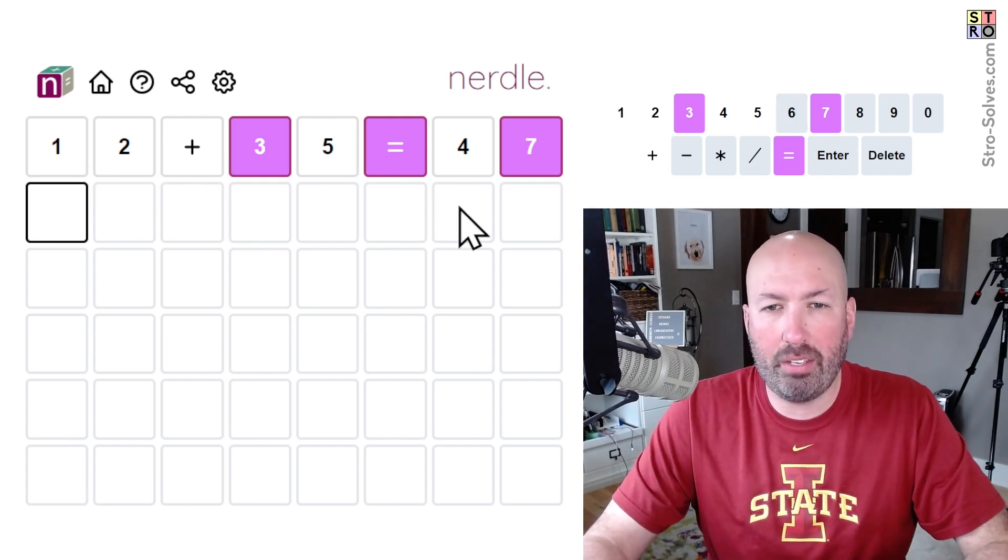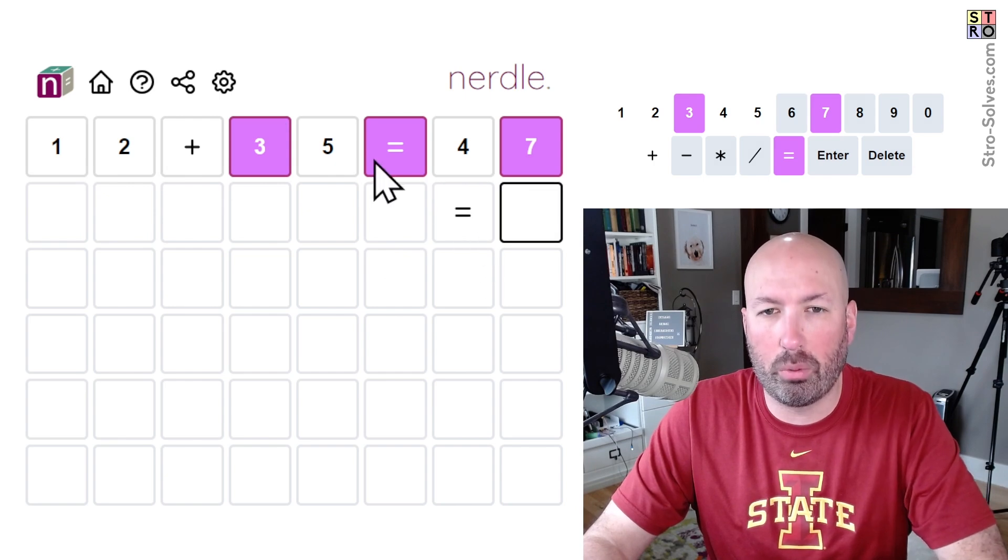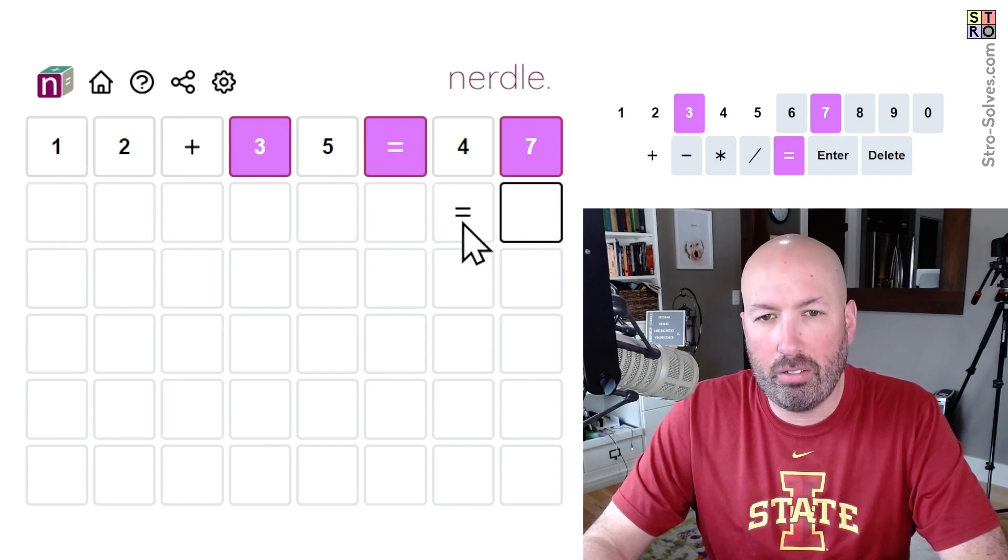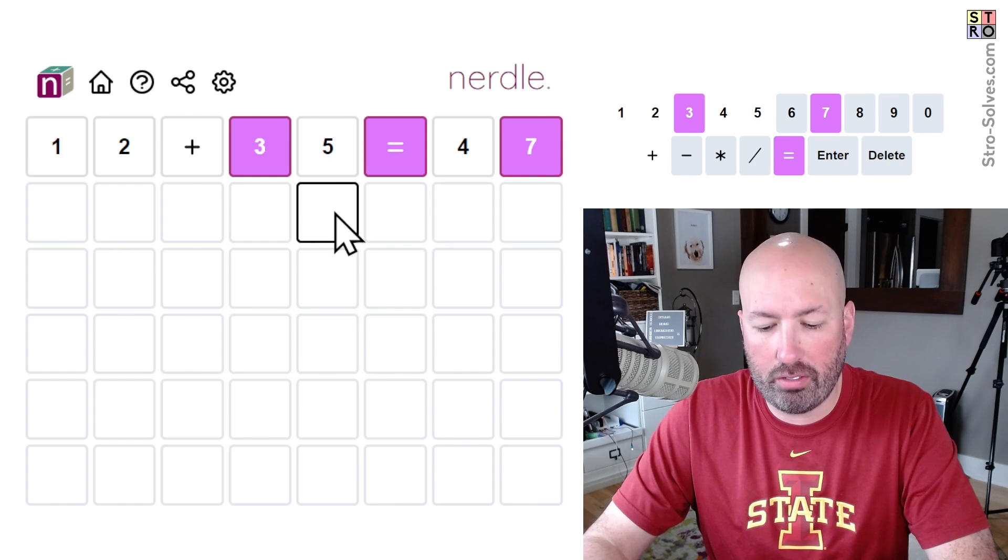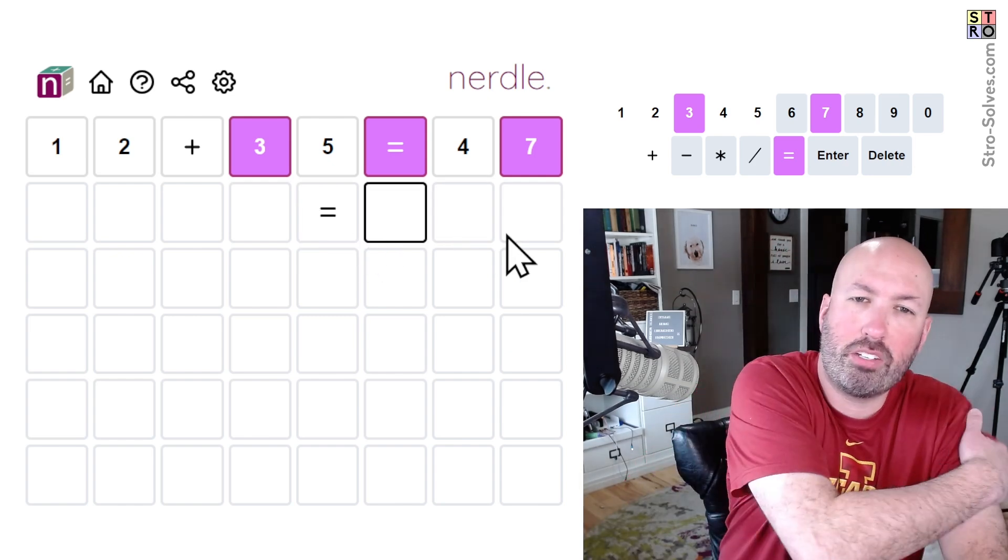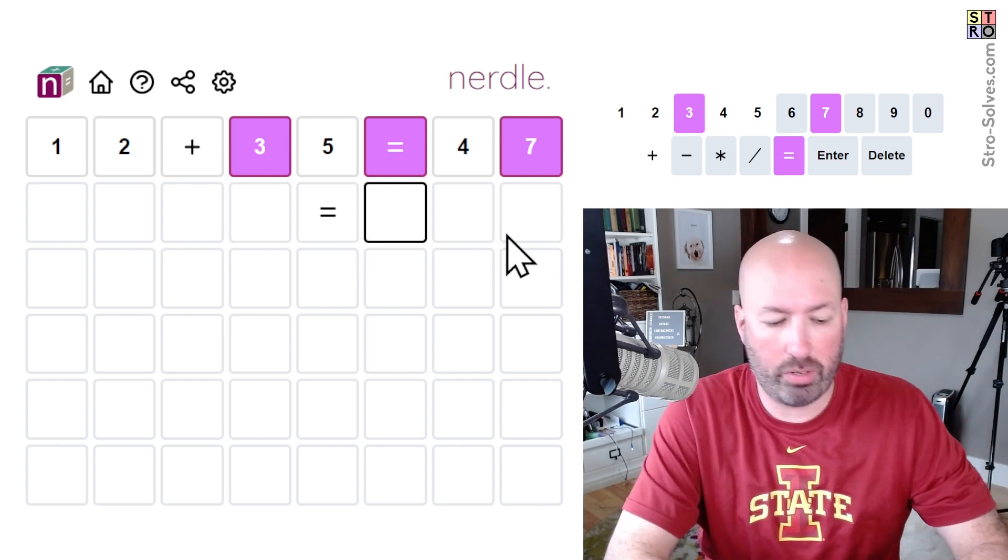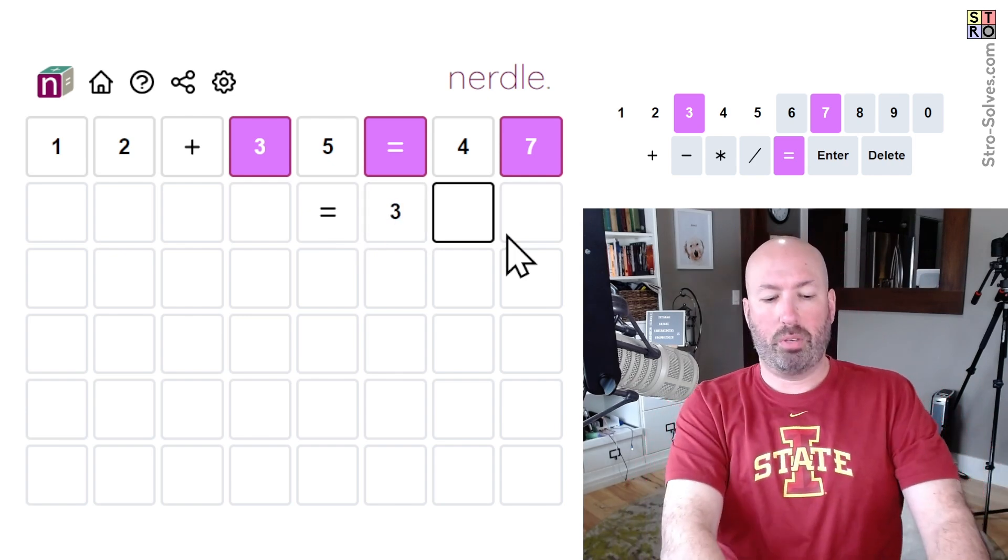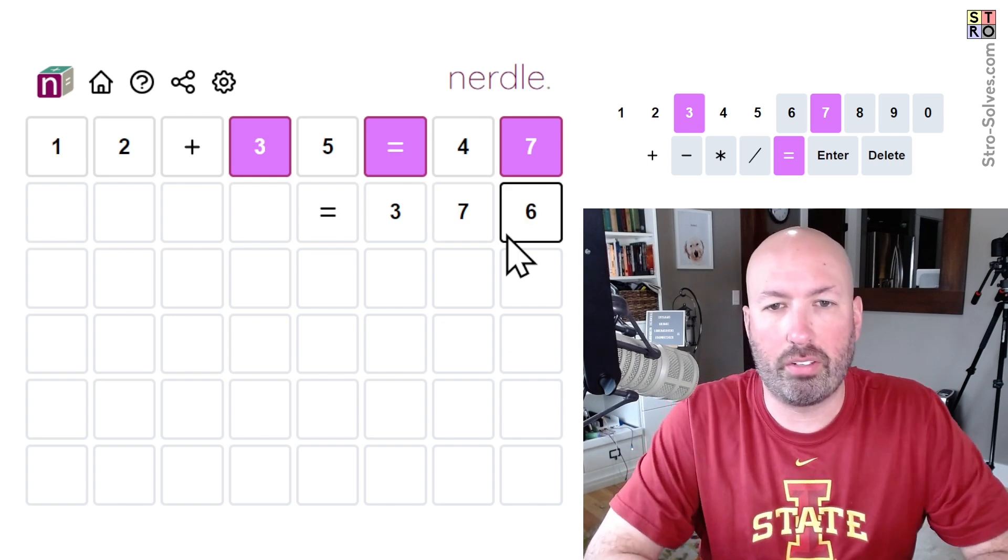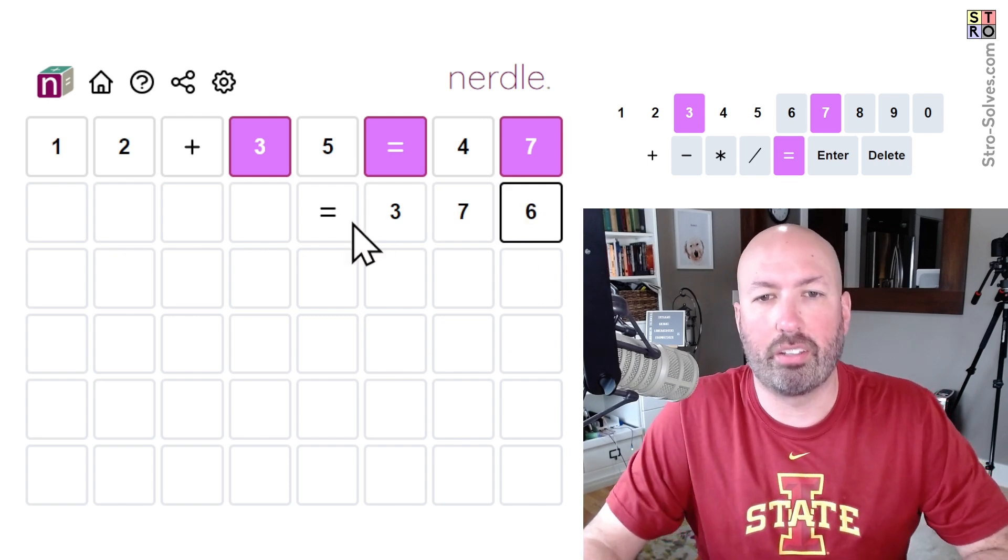So we're probably, I mean we could be doing, you know, it equals a single digit, but it feels like it's more likely to equal a three digit number potentially, although there's no one or two, so you'd have to be at least 300. But we could do like, you know, 376 or something. I don't know, we could do lots of things.